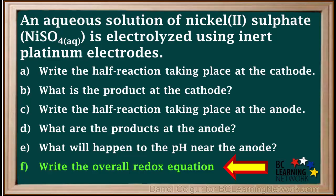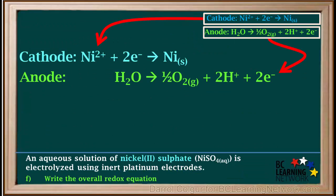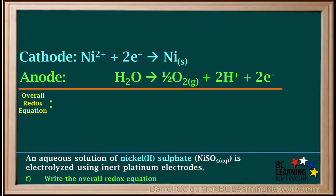Question F asks us to write the equation for the overall redox reaction. To do that, we write the half reactions at the cathode and the anode and add them up. We see that nickel 2+ gains 2 electrons and water loses 2 electrons. So electrons lost are equal to electrons gained. So we can cancel 2 electrons from both sides.